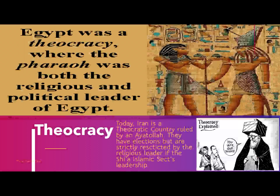Today, theocracies are rare. There is a theocracy in Iran right now — Iran is a quote-unquote democratic theocracy. They do have elections for their leaders, but all leaders have to do what the Ayatollah, the religious leader of the Shiite Islamic mosque, says. A theocracy is a government where the leader claims to be a god, to be a descendant of a god, to be one with the gods, or a leader sent by the gods.